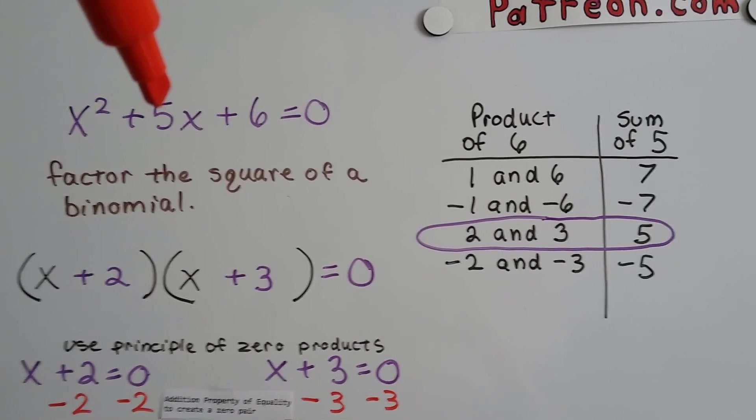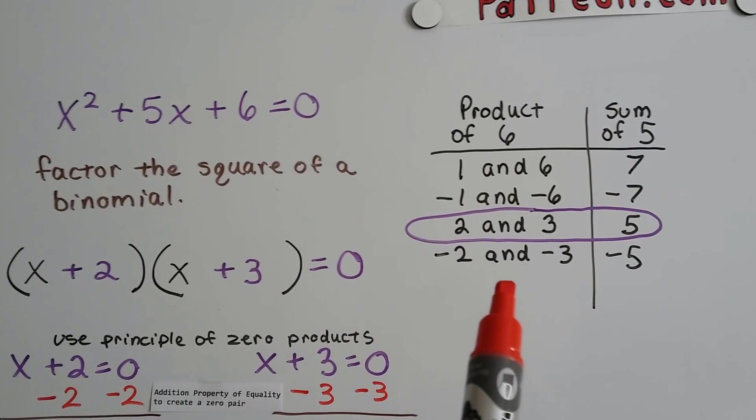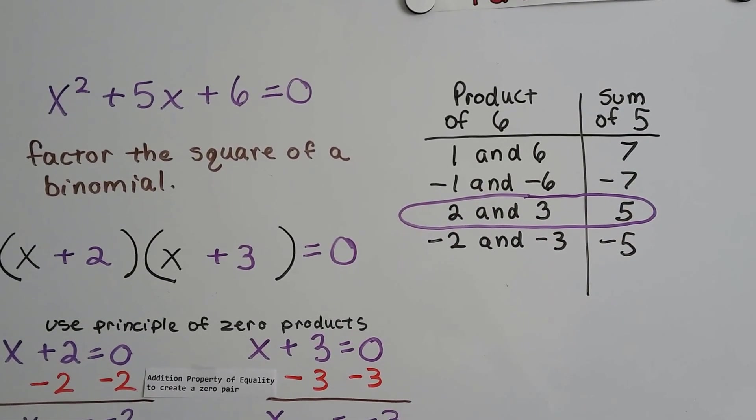We make a list of all the products of a positive 6, but we need a sum of a positive 5. So we make our list of the products of 6, and we come up with a 2 and a 3 equals 6, and the sum equals 5.